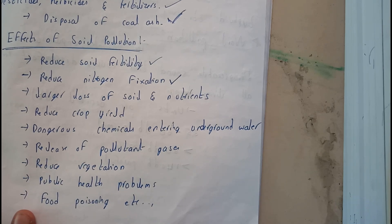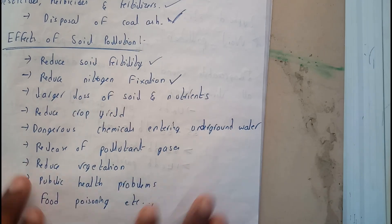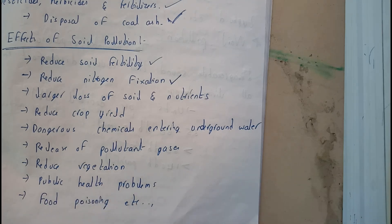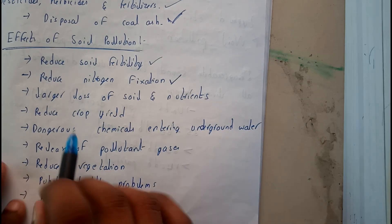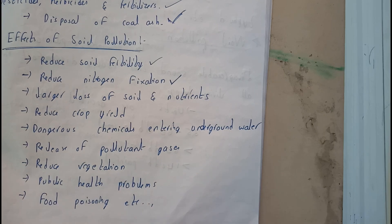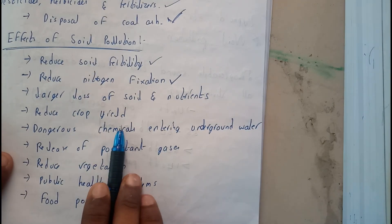Plants take in nitrogen and release it in a huge cycle. Soil pollution reduces nitrogen fixation and causes large loss of soil and nutrients. Loss of soil fertility leads to reduced crop yield.